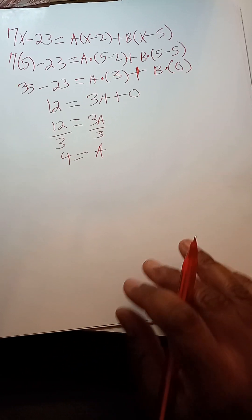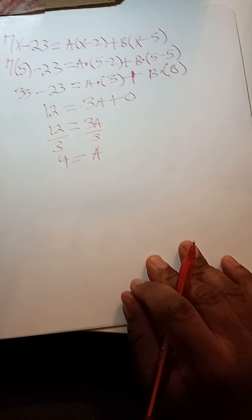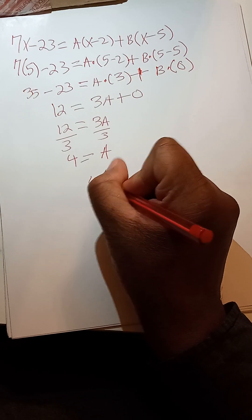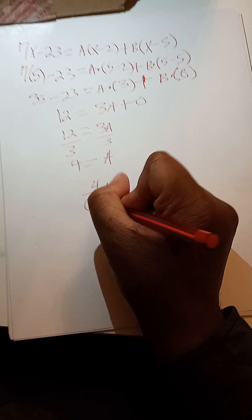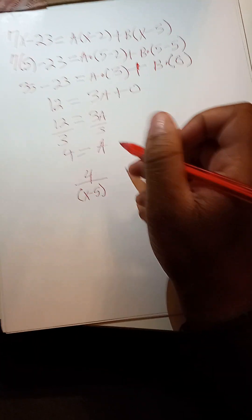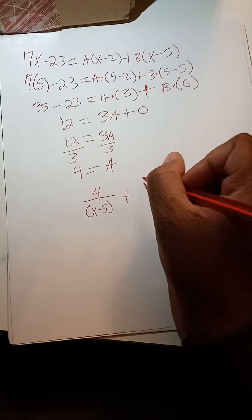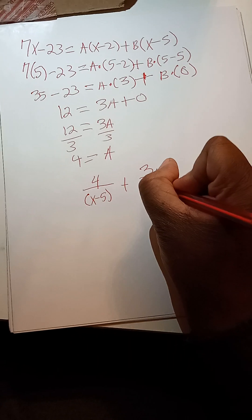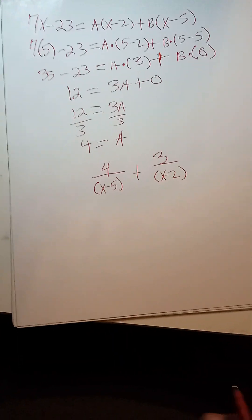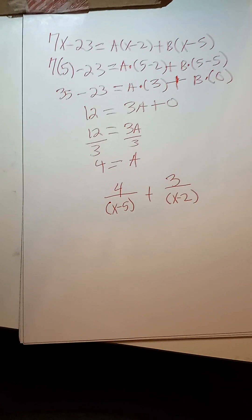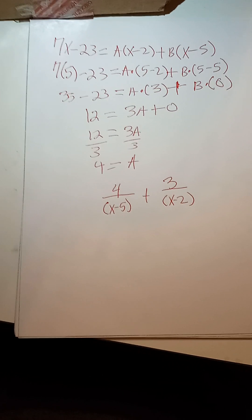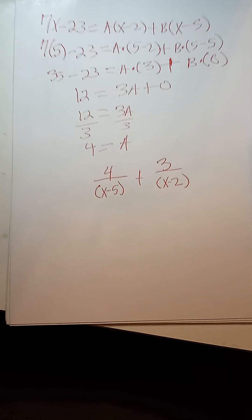So the partial fraction decomposition breaks down to 4 over (x minus 5) plus 3 over (x minus 2). Let's prove that these both balance out: 4 over (x minus 5) plus 3 divided by (x minus 2).